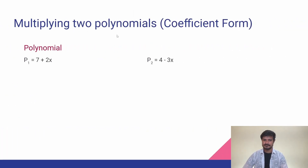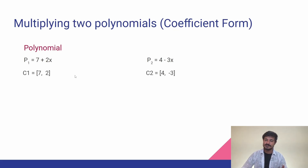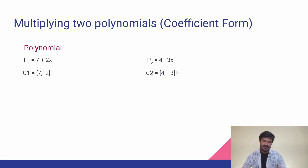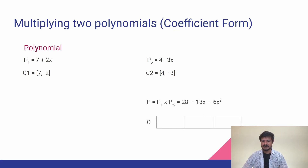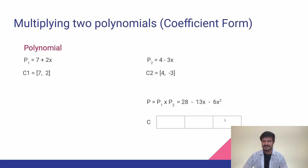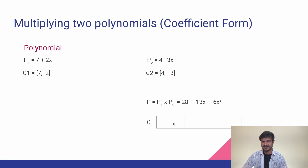Now let's evaluate this polynomial using the coefficient form. The coefficient form for the first polynomial would be [7, 2] and for the second polynomial [4, −3]. To multiply these two polynomials, the process is exactly the same as in the previous slide. The product, which we already evaluated, is 28 − 13x − 6x², and its coefficient form has three coefficients since it is a degree-two polynomial.